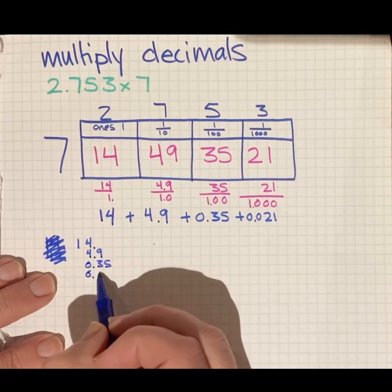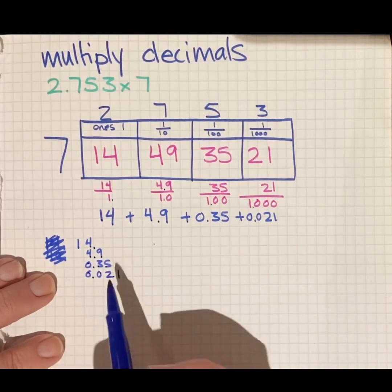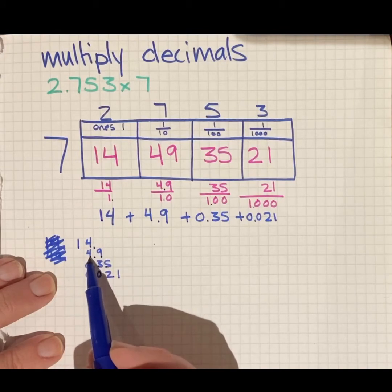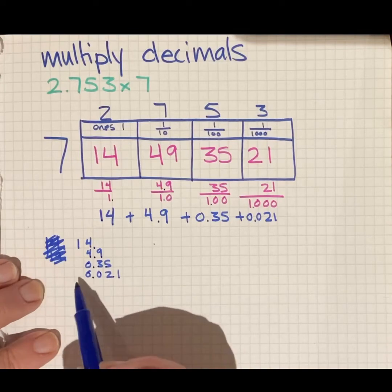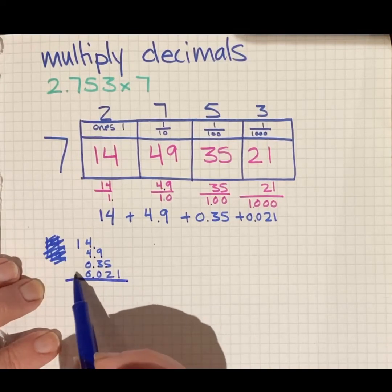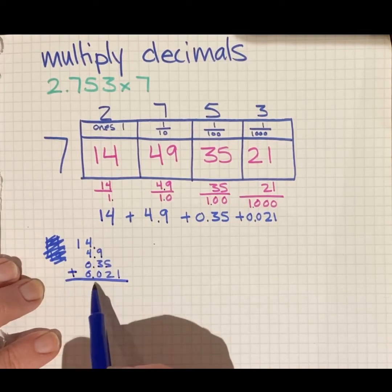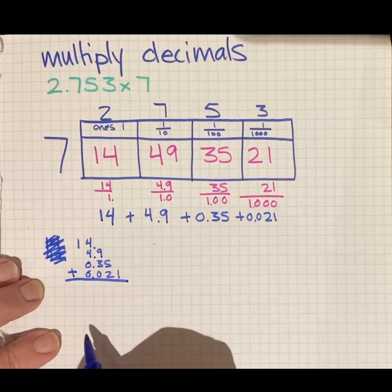Plus 0.021. So 14 ones, 4.9 or 49 tenths, 35 hundredths and 21 thousandths. Draw my line. Remember, I've lined it up vertically. I've lined it up with the decimal place. I've made sure I'm using the right operator.